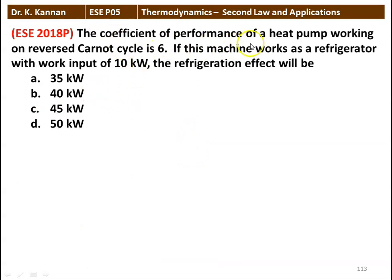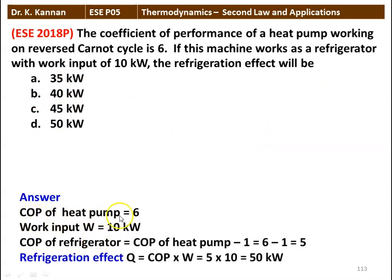Next question: the coefficient of performance of a heat pump working on a reversed Carnot cycle is 6. If this machine works as a refrigerator with a work input of 10 kilowatt, the refrigeration effect will be 35, 40, 45, or 50 kilowatt. Answer: COP of heat pump = 6, W = 10 kW. COP of refrigerator = COP of heat pump − 1 = 5. Refrigeration effect Q = COP × W = 5 × 10 = 50 kilowatt.